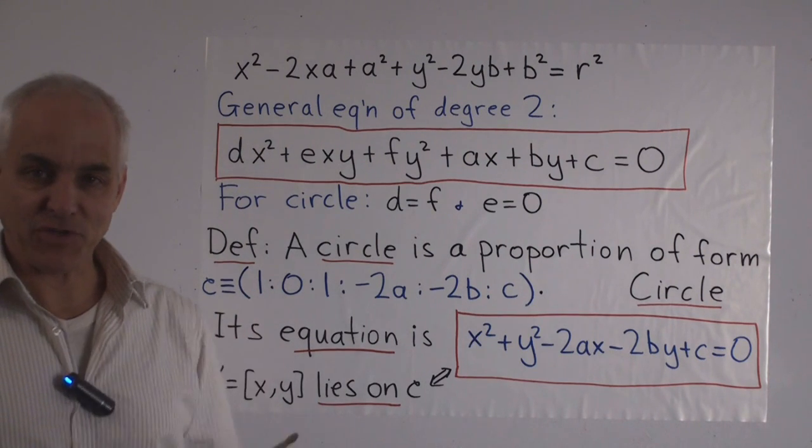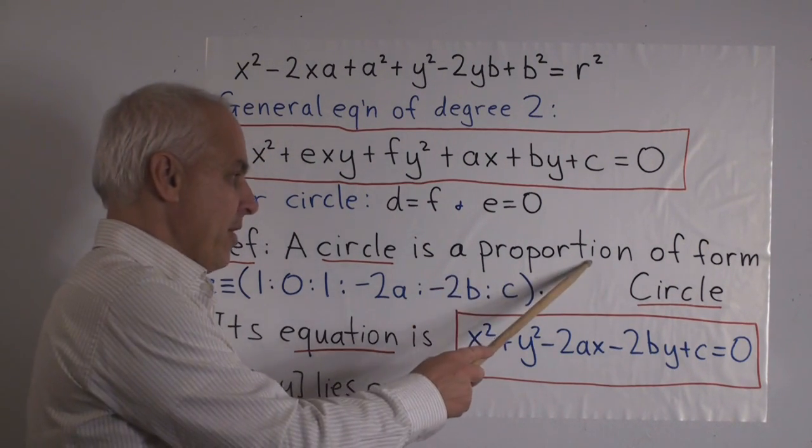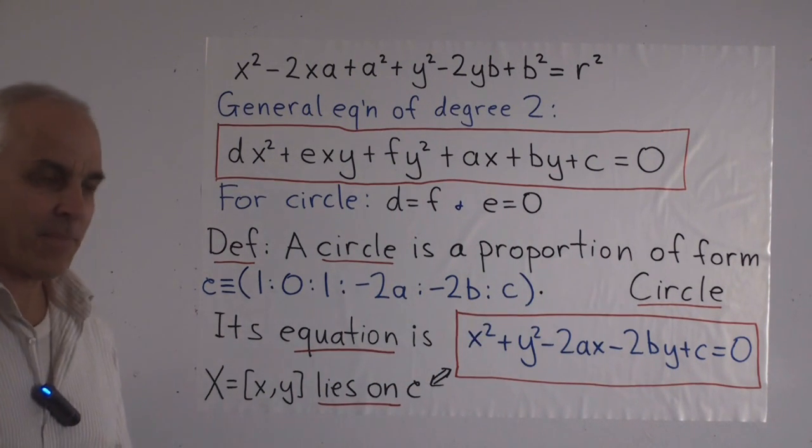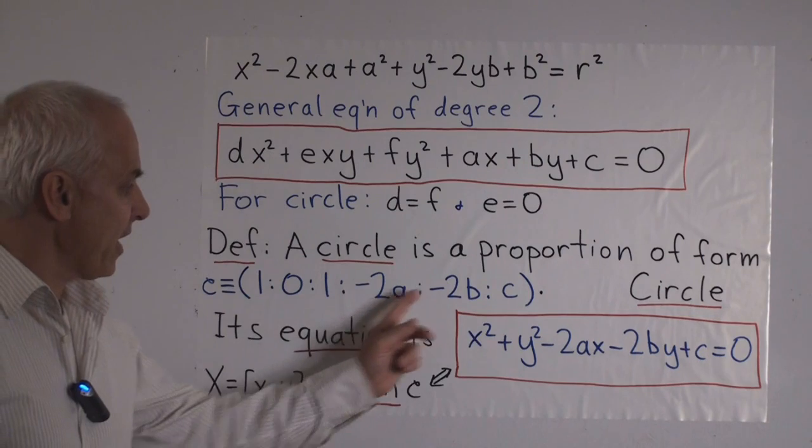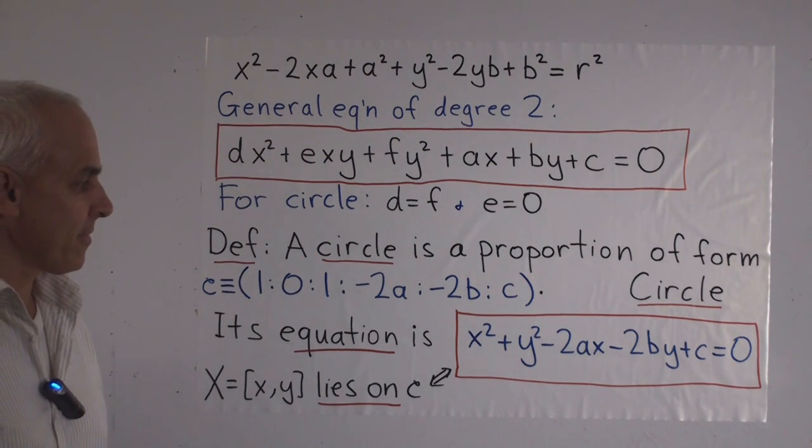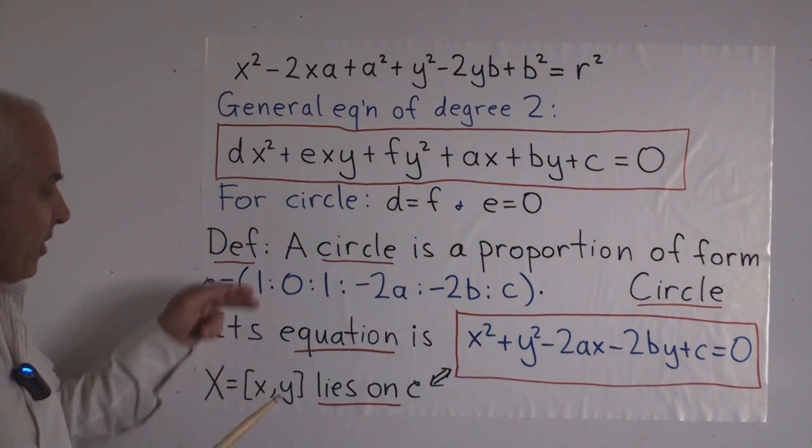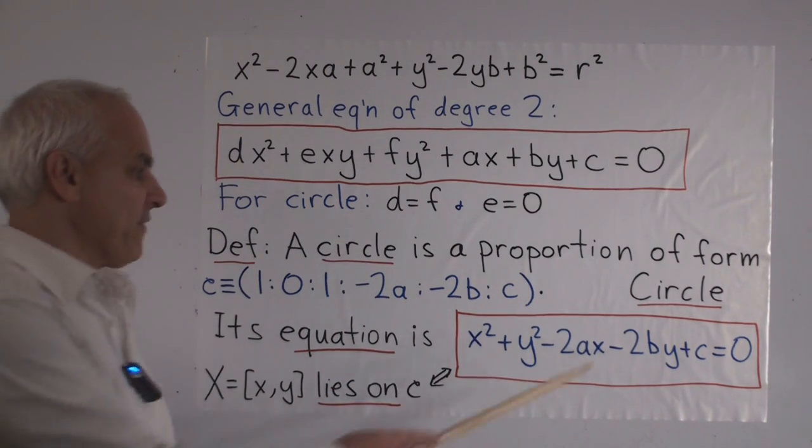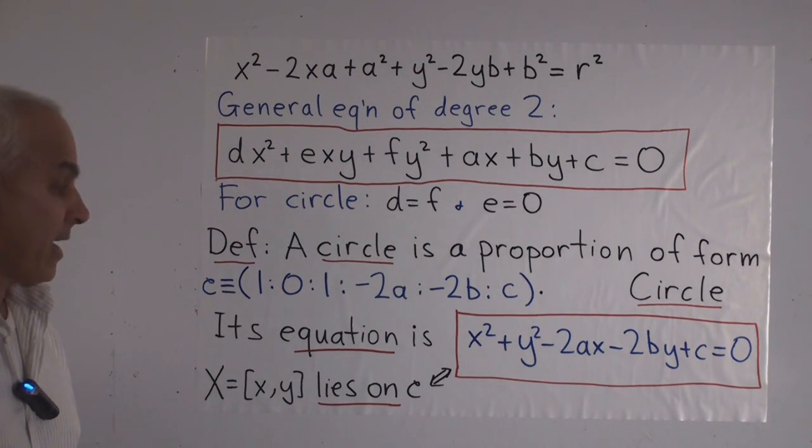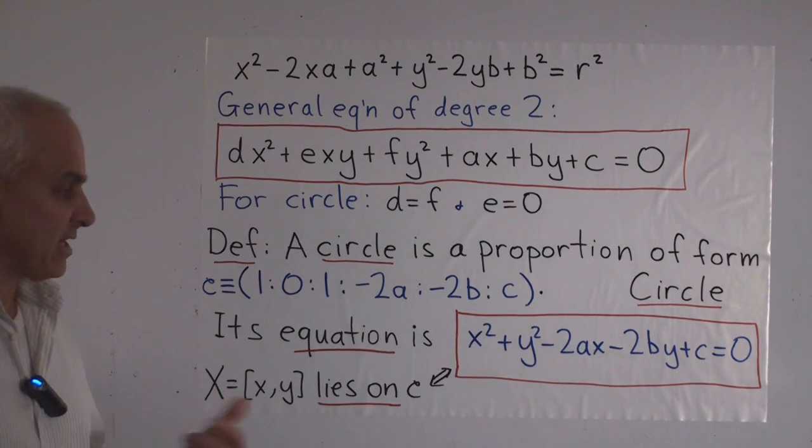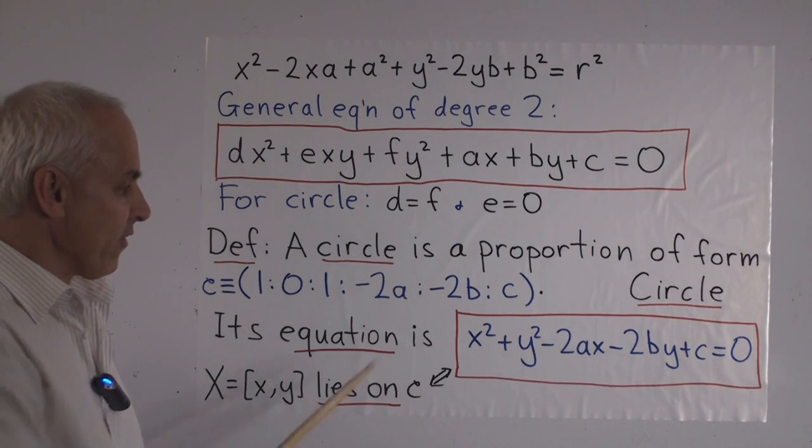And that motivates our definition of a circle. A circle is nothing but a proportion of the form 1:0:1:-2a:-2b:c. In other words, it's the 6 coefficients that are appearing in this formulation here when we look at the equation of the circle. A proportion is all that's needed because when we multiply all those numbers by a fixed scalar, the equation doesn't change. This defines a new mathematical object which we call a circle. And we also say that the equation of the circle is what we get when we expand it out in terms of x² and y². And this is just the equation that explains to us when a point (x,y) lies on the curve C.